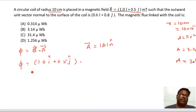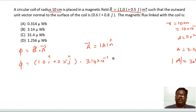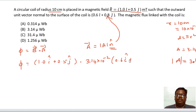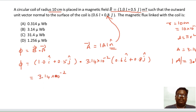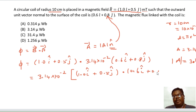Coming back to the calculation, φ = B⃗·A⃗, where the magnitude of A is 3.14×10⁻² and n̂ = 0.6î + 0.8ĵ. So we compute the dot product: (1.0î + 0.5ĵ) · (0.6î + 0.8ĵ), with the area factor 3.14×10⁻² out front.